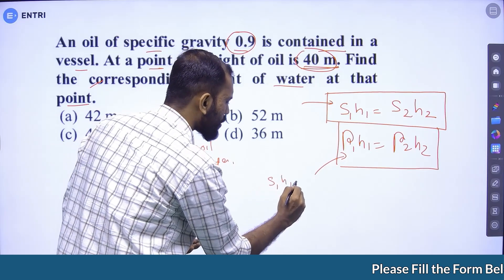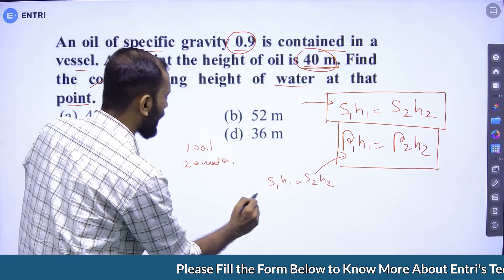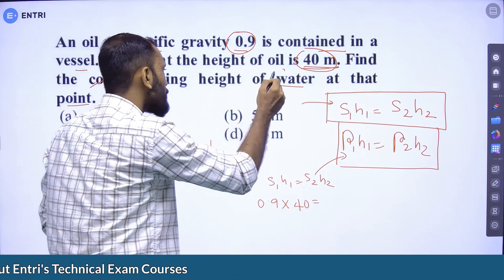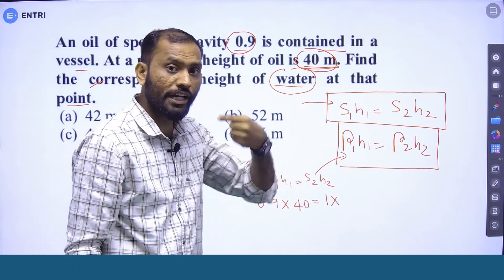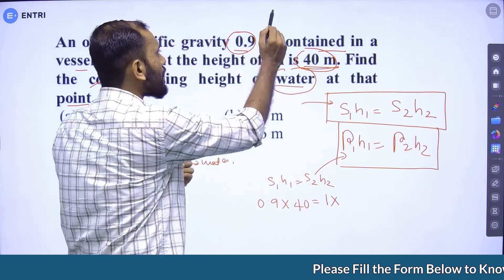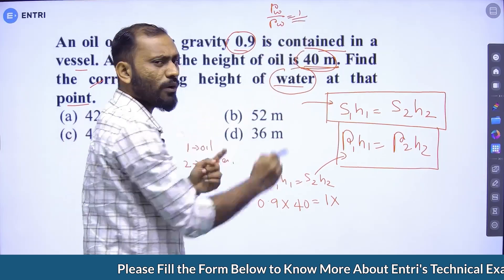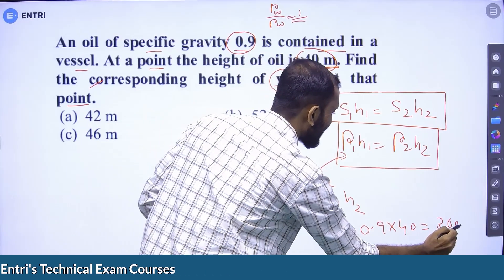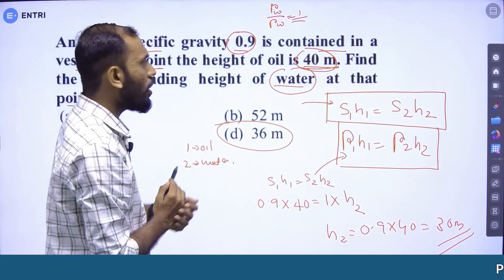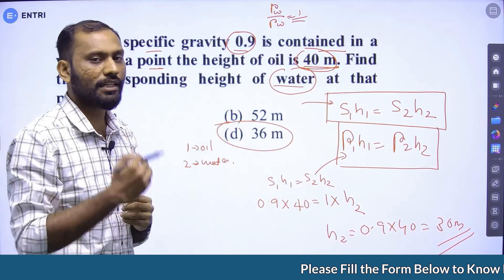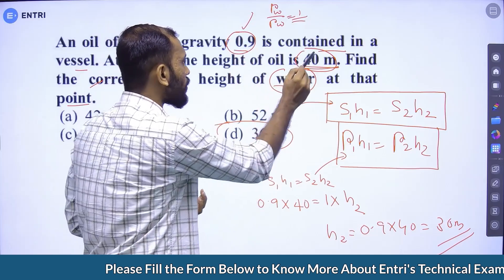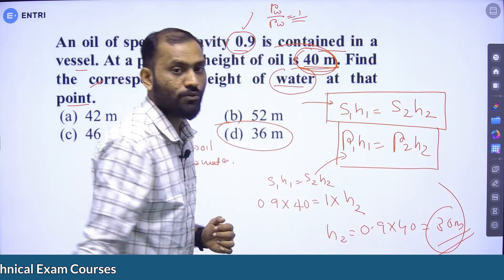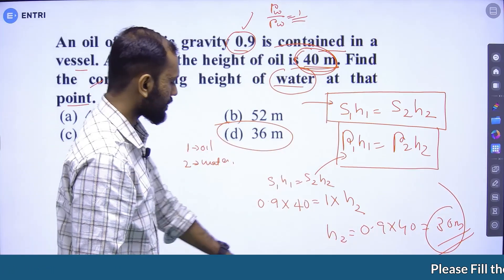Using the equation S1 × H1 = S2 × H2: subscript 1 is oil, subscript 2 is water. Specific gravity of oil = 0.9, oil height = 40 meters; specific gravity of water = 1. So 0.9 × 40 = 1 × H2, giving H2 = 36 meters. Option D is the correct answer.